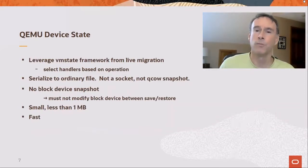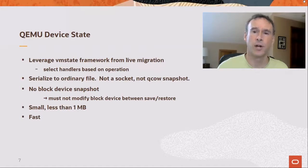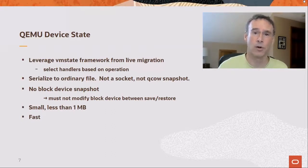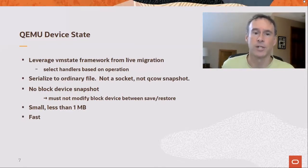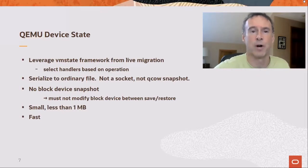To handle other QEMU device state, we leveraged the VM state framework that live migration uses. We modify the code so that the save and restore handlers can be selected based on the operation, such as CPR versus snapshot versus migration. Objects are serialized to an ordinary file — not a socket like live migration and not to a QCOW snapshot. This allows us to support a variety of image formats and guest boot devices. However, because the block devices are not snapshotted, one must not modify the blocks between the save and restore. The save file is small, less than one megabyte, and writing the file is very fast, adding little to the guest pause time.